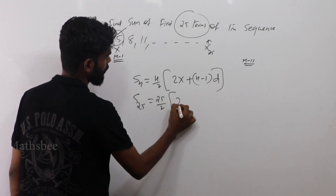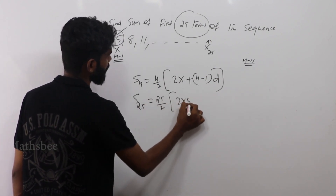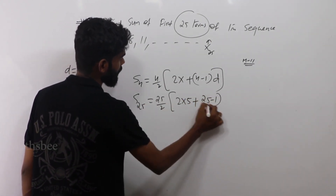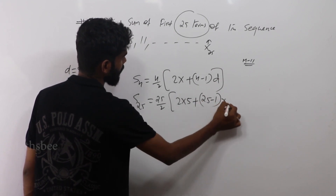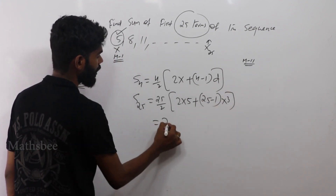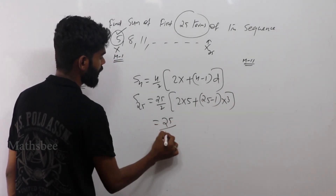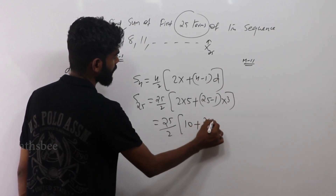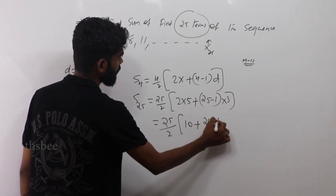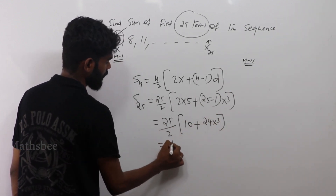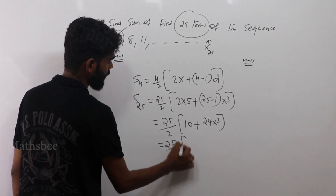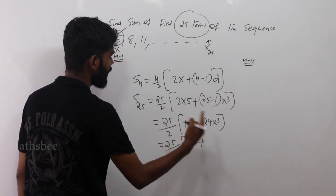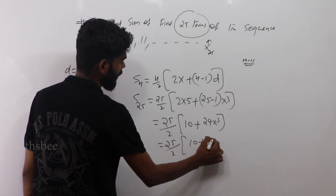S25 = 25/2 × [2 × 5 + (25 − 1) × 3] = 25/2 × [10 + 24 × 3] = 25/2 × [10 + 72] = 25/2 × 82. That gives 25 × 41.